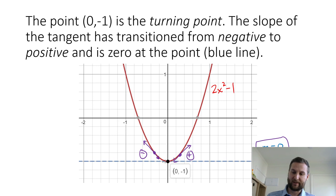So at some point you're going to have this m equals zero. And this point here, in this case zero comma minus 1, represents what we call a turning point where the slope has transitioned from negative to positive. A turning point could also have a slope transitioning from positive to negative.